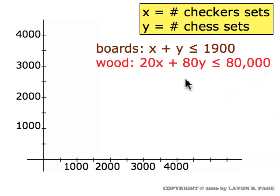Their wood constraint is 20 units of wood for each checker set, 80 units of wood for each chess set, and that total amount of wood they use cannot exceed their daily supply of 80,000 units of wood.